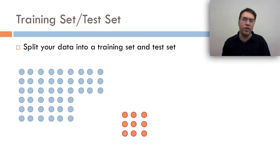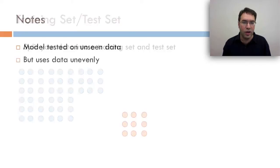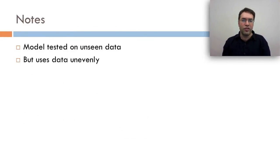So one way to look at generalizability is just to have a training set and a test set. You take your data and you split it into a training set and a test set, usually with the training set being a good bit bigger than the test set. This is good, your models test on unseen data, but it uses your data unevenly. Some data points are training points, and some data points are test points, and never the two shall meet.